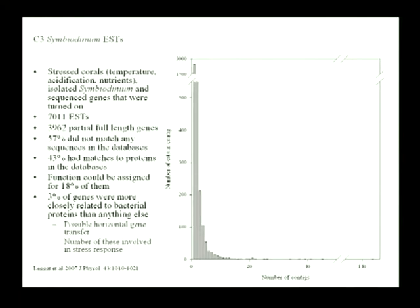When we did bioinformatic analysis on these genes, we found that 57% of them didn't match anything in the database — we couldn't work out what the function was. About 18% of these genes we could actually assign some sort of function to, so we could start saying these genes do this particular function and start looking at them as targets. Interestingly, about 3% of these genes were much more closely related to bacteria than any other algae or eukaryote, suggesting possible horizontal gene transfer. There's now a lot of other work in dinoflagellates indicating they can incorporate DNA through horizontal gene transfer, and a number of these horizontally transferred genes are involved in stress responses.